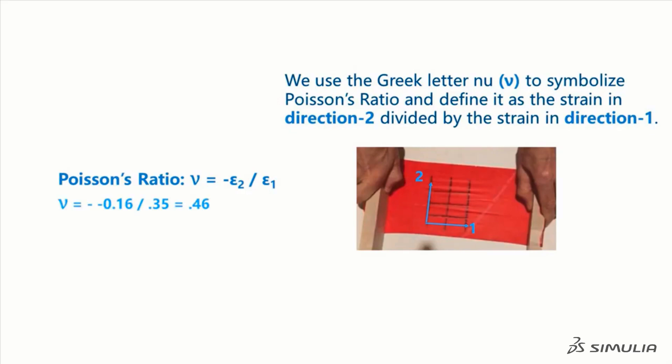For the rubber that the thin sheet was fabricated from, we calculate the Poisson's ratio to be 0.46.